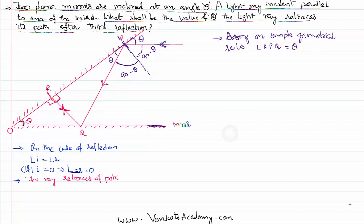Now at point Q, we draw a normal. The angle of incidence is i, and by the law of reflection, the angle of reflection is also i. Since the normal makes 90 degrees with the mirror surface, the remaining angle — between the reflected ray and the mirror — is 90 minus i. That is the basic observation at point Q.